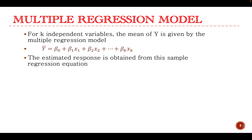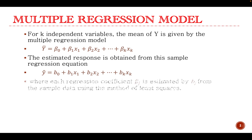The estimated response is obtained from this sample regression equation. For each regression coefficient, beta sub j is estimated by b sub j from the sample data using the method of least squares.